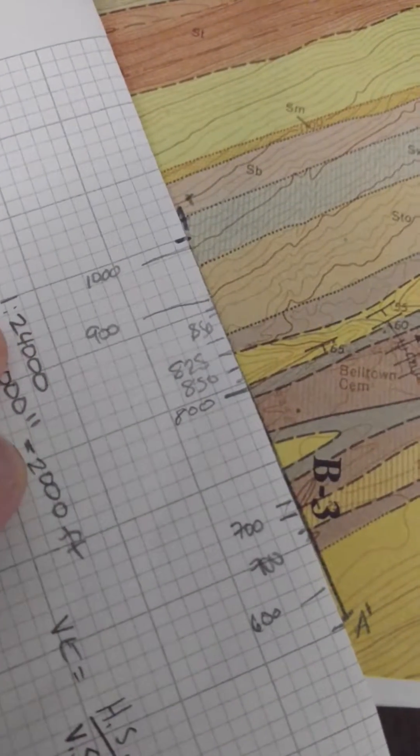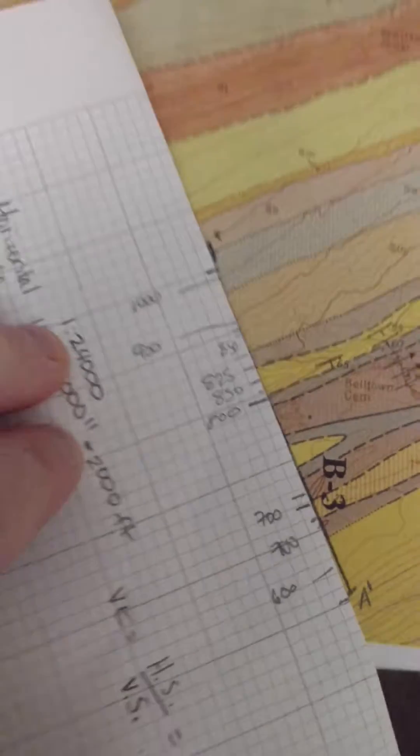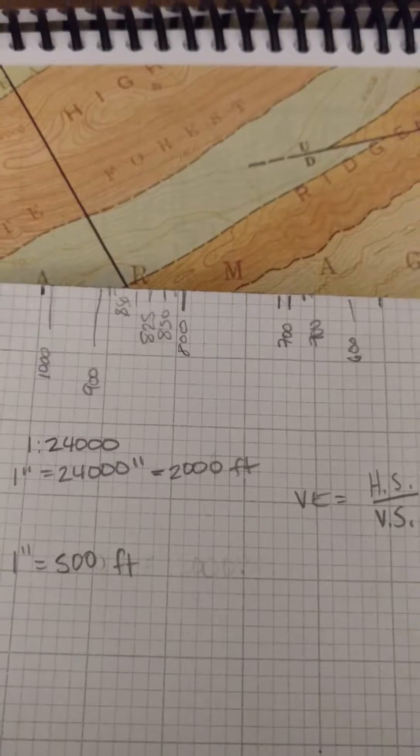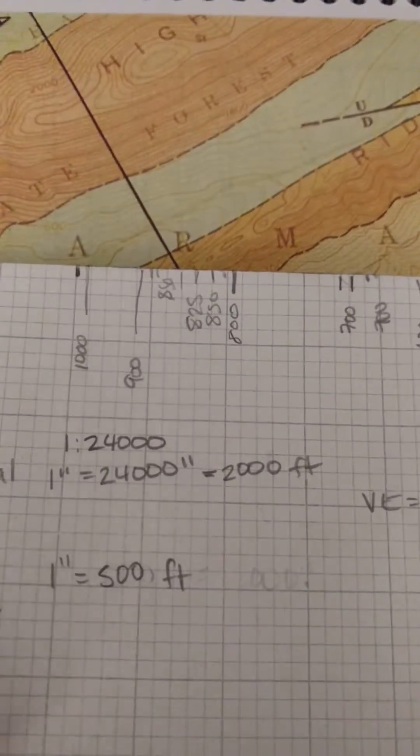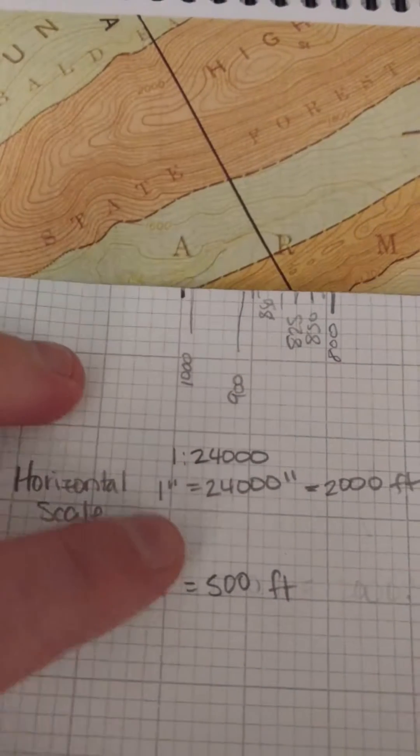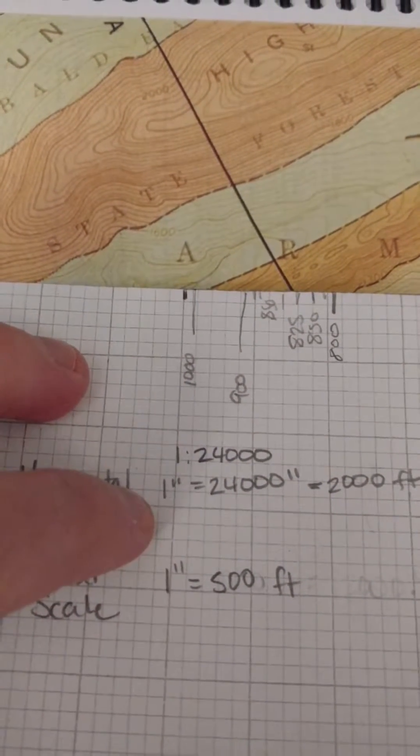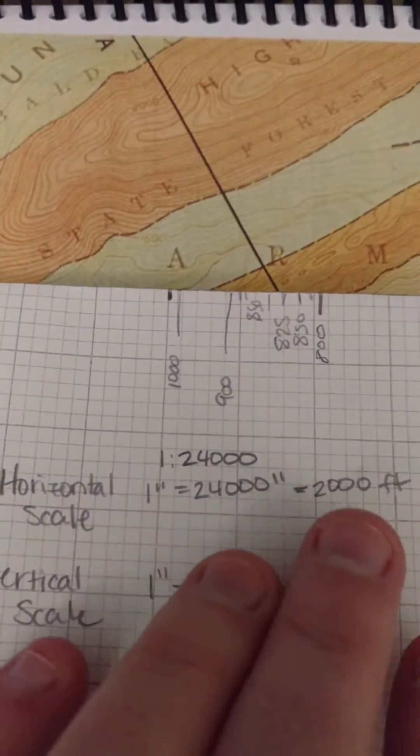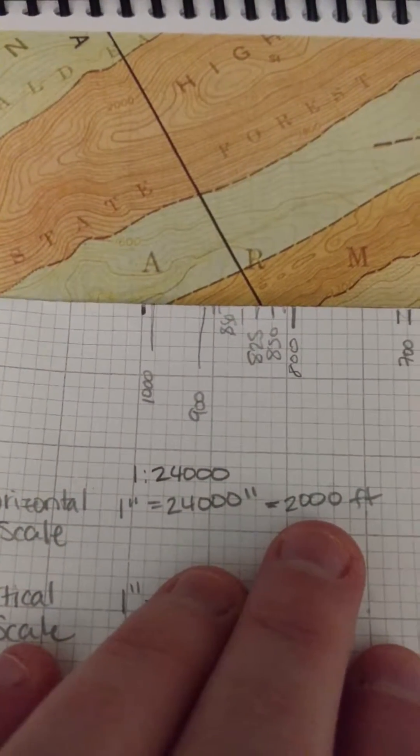So after I did that, I've got all these tick marks laid out, I have my A to A prime. I know that my horizontal scale on my map is 1 to 24,000. That means that every inch is equal to 24,000 inches on the map. 24,000 inches divided by 12 is about 2,000 feet.